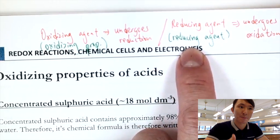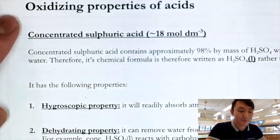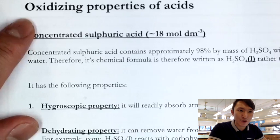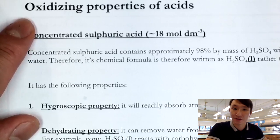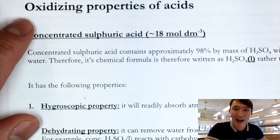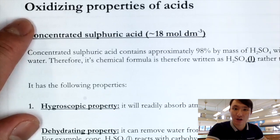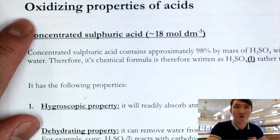In this part we focus on acids and their oxidizing properties. Thinking back to Form 4, we introduced common acids like HCl, H₂SO₄, and nitric acid, mostly in diluted form. Today we look at how concentrated acids react differently — not just exhibiting acidic properties like neutralization, but something more.